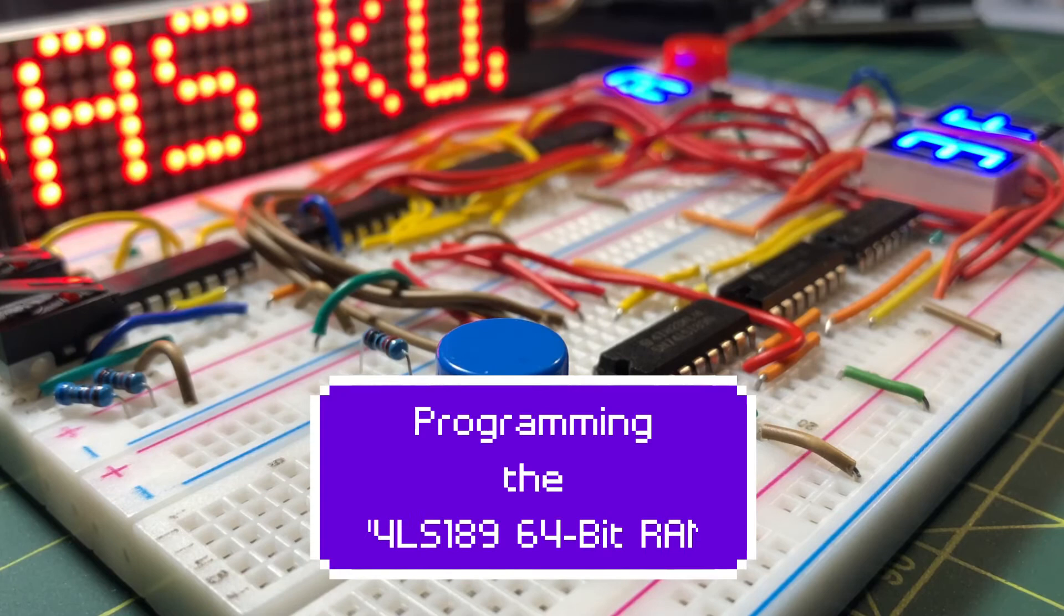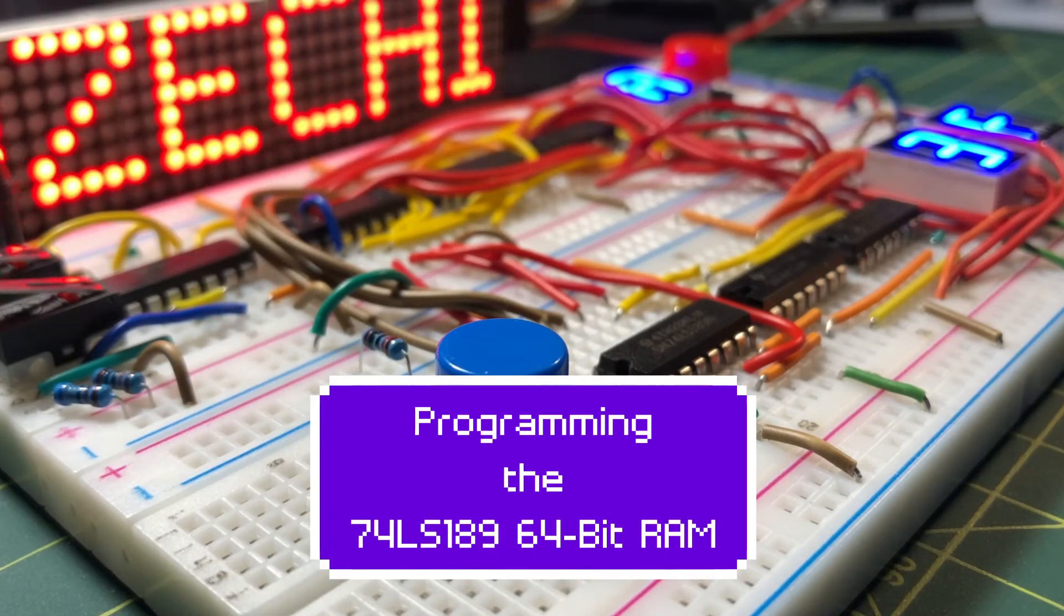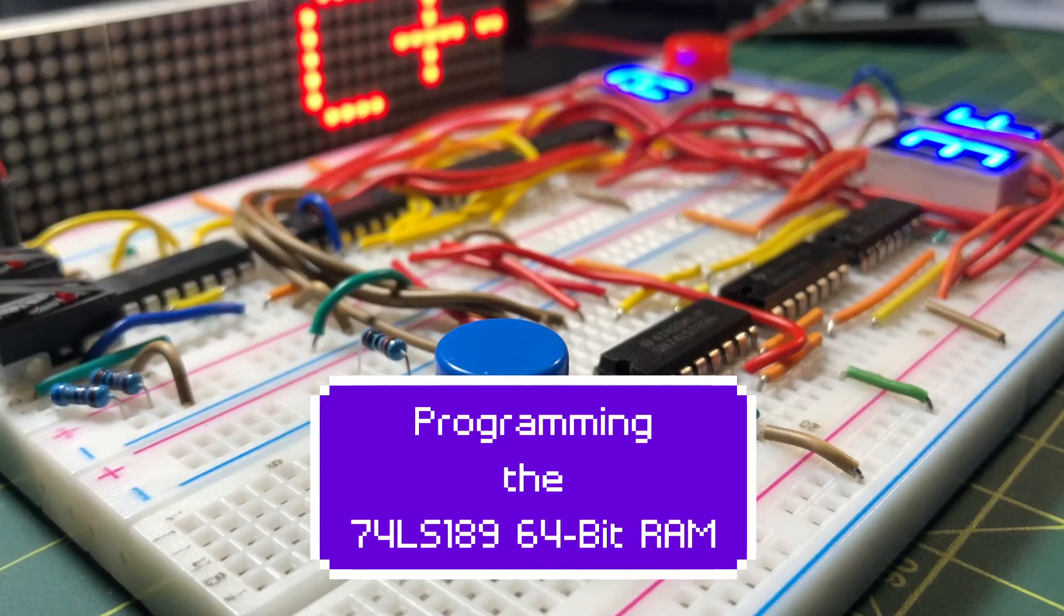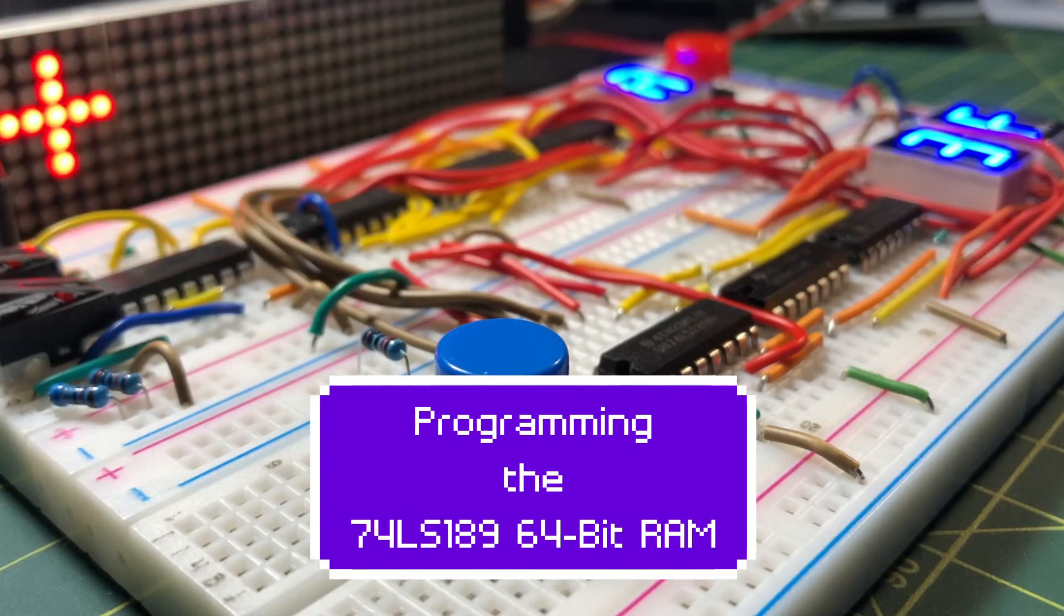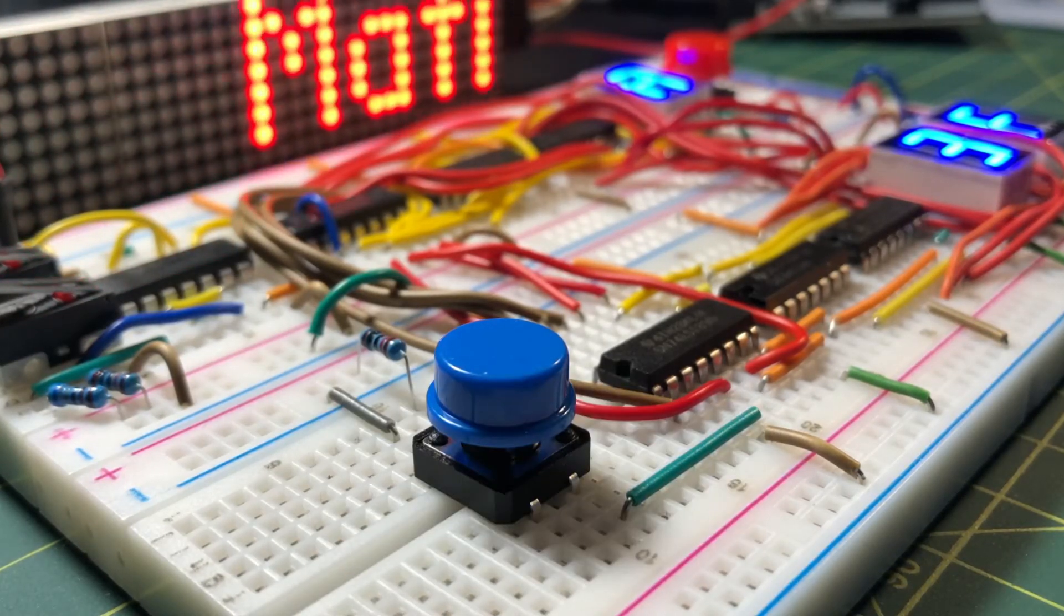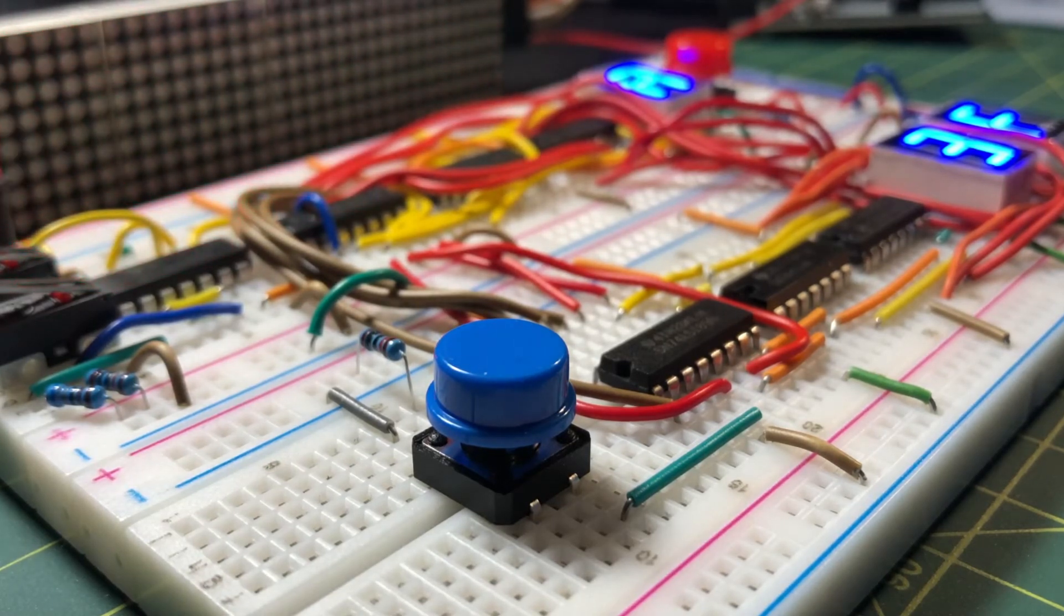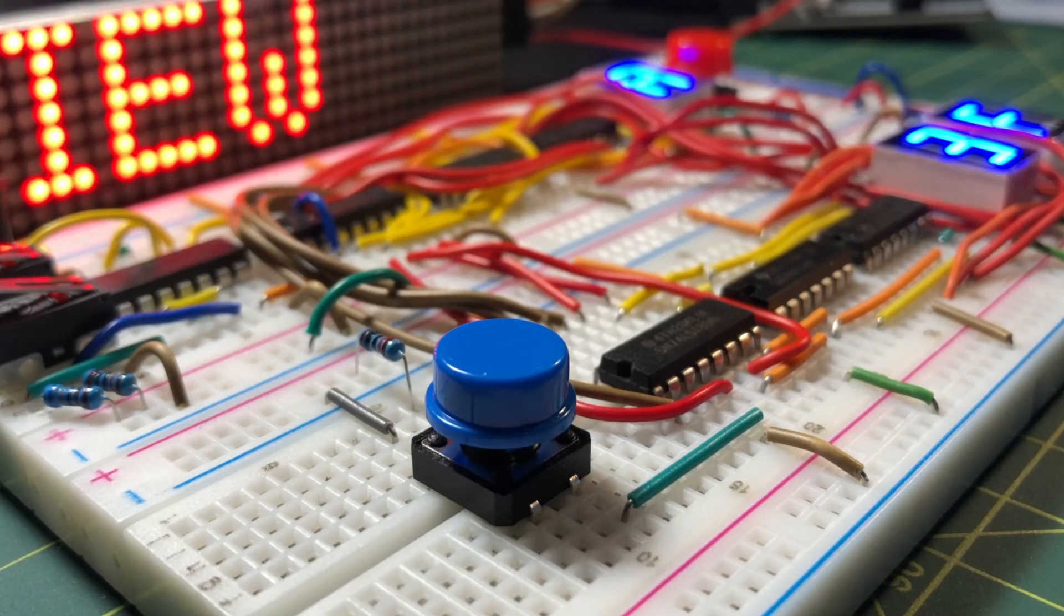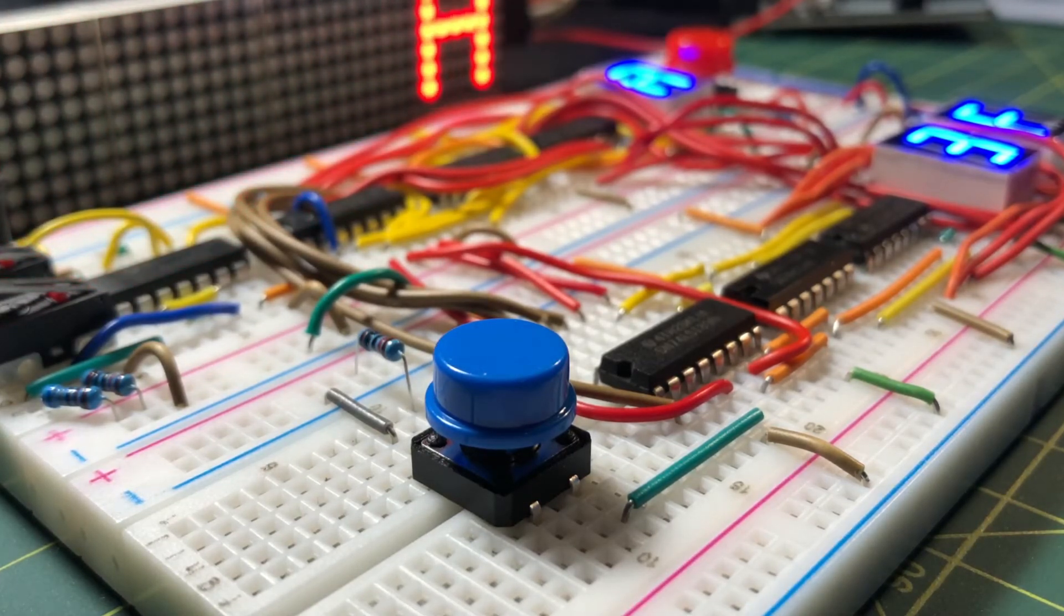This video presents a circuit to program memory chip 74LS189. The 74189 is a 64-bit RAM having 16 memory locations and the size of each location is 4 bits. The 74189 can easily be used in 4-bit or 8-bit microcomputer applications.